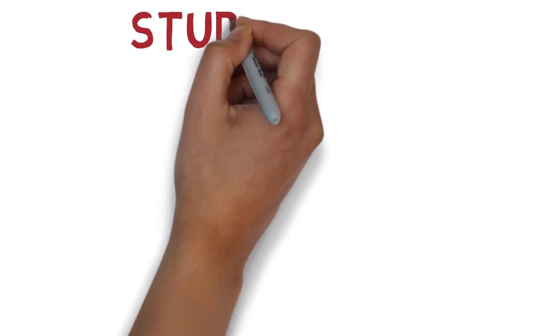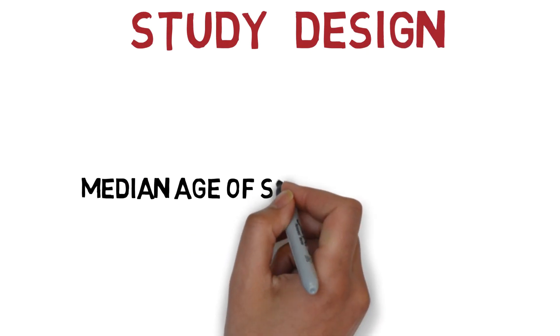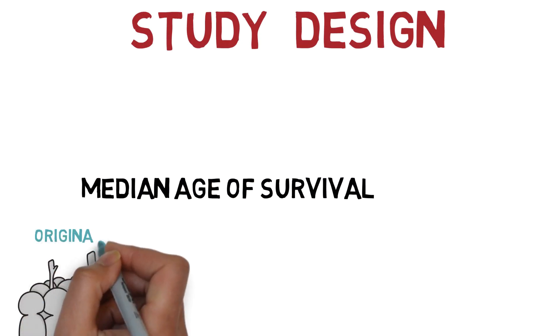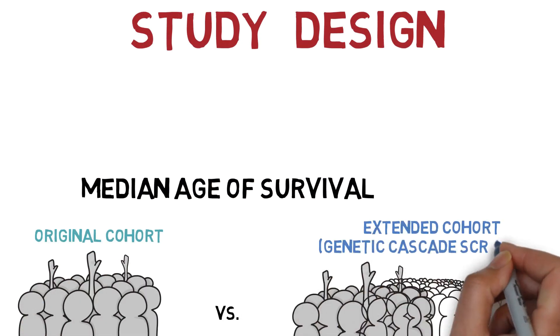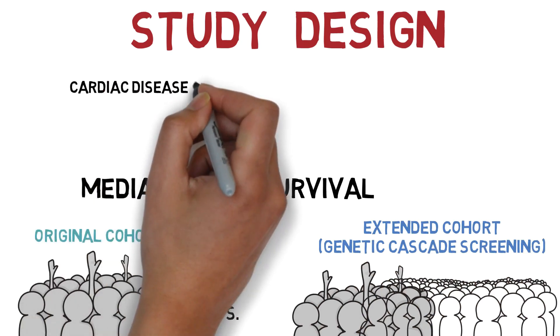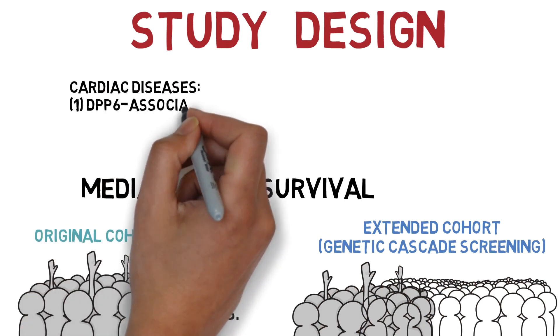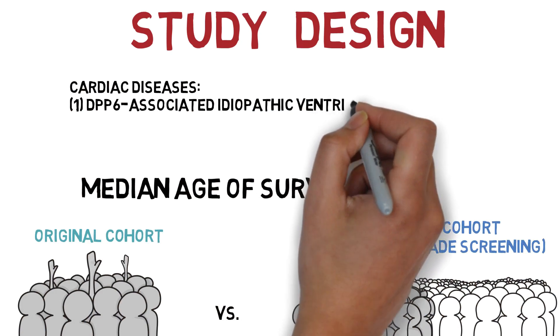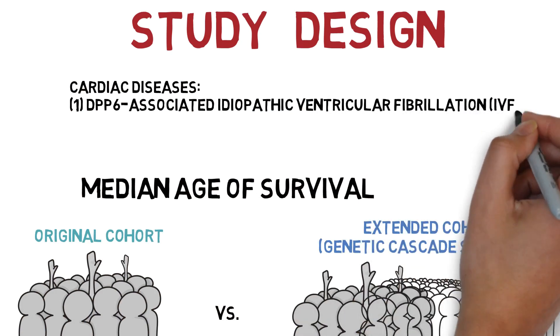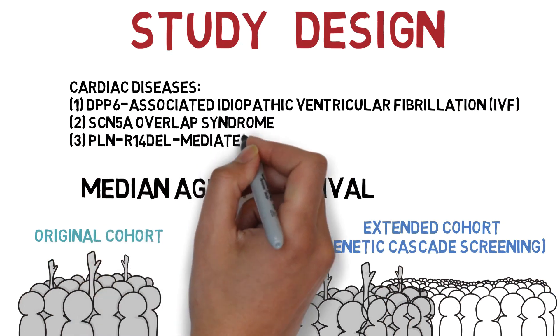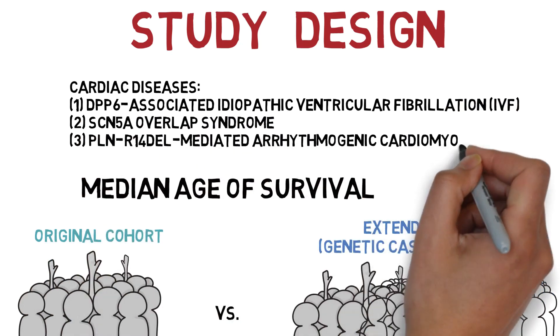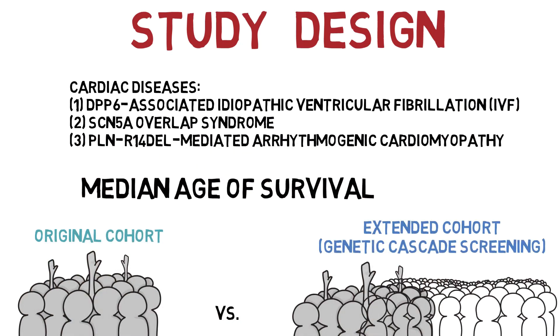For three autosomal-dominantly inherited cardiac diseases caused by a founder mutation, the authors compared the median age of survival of the original cohort with that of the cohort after genetic cascade screening. The diseases examined include DPP-6-associated idiopathic ventricular fibrillation, SCN-5A overlap syndrome, and PLN-R14 deletion-mediated arrhythmogenic cardiomyopathy.